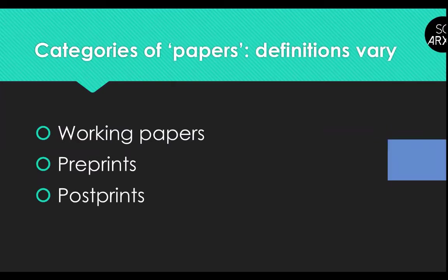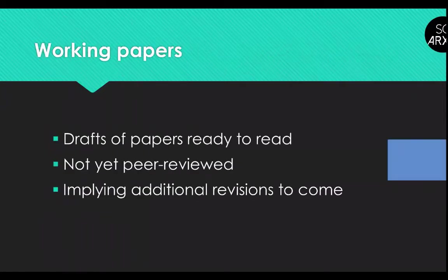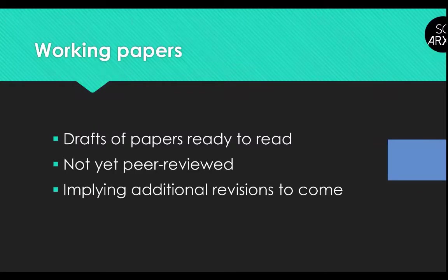You could call them all papers if you want, but in different disciplines and different corners of academia there are different definitions that people use, and sometimes it can be confusing. The important thing is you're sharing your research and getting the benefits of doing that, but it is useful to know what people are talking about. First term: working papers. These are usually understood to be a completed draft of something that's ready to read, but something that has not yet been peer-reviewed. The implication with the term 'working' is that there are additional revisions to come.